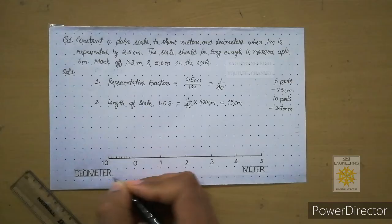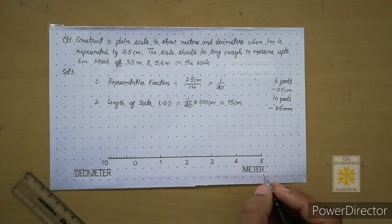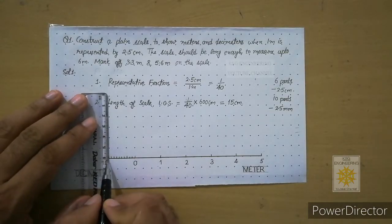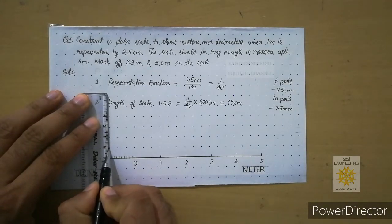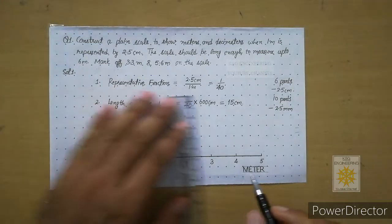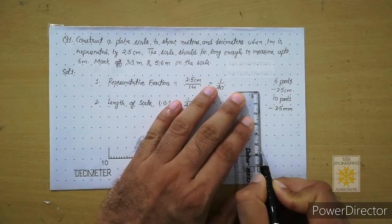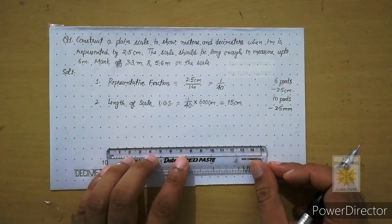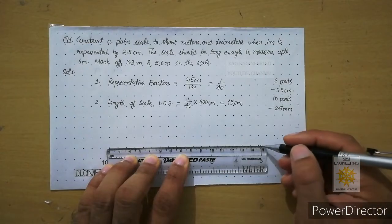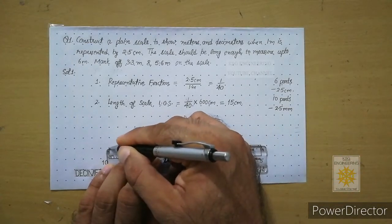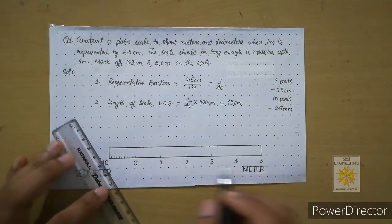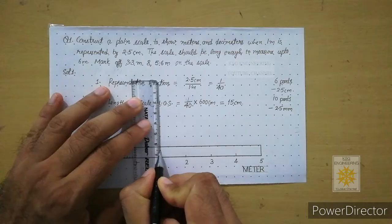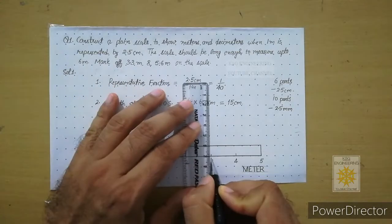This is the decimeter scale and this is the meter scale. Now we make the body of the scale: from the endpoints draw vertical lines of one centimeter on each side — continuous thick — then join them with a thick horizontal line. From all the division points draw vertical lines to show the individual parts. These must be continuous thick.